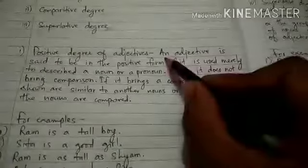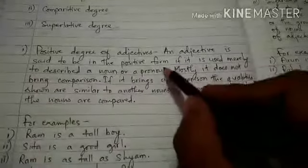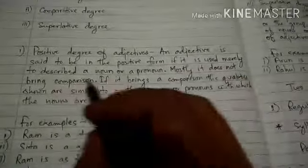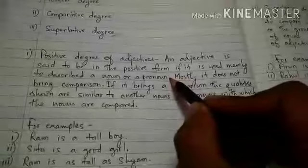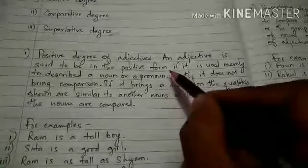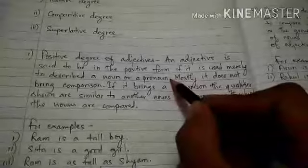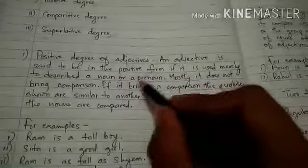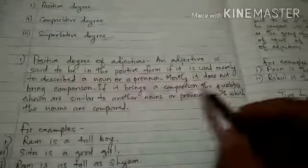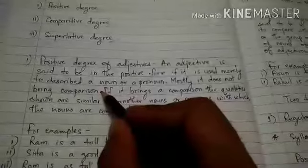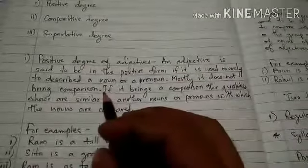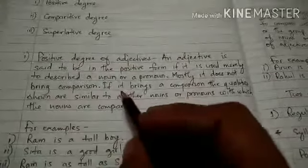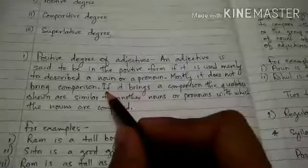An adjective is said to be in the positive form if that adjective is used to just describe a noun or a pronoun, without showing any comparison. If that adjective is used to describe or qualify a noun or a pronoun, then that adjective is in the positive degree. Mostly, it does not bring comparison. But it does not mean that by using positive degree of adjectives we never bring comparison — sometimes it brings comparison also.